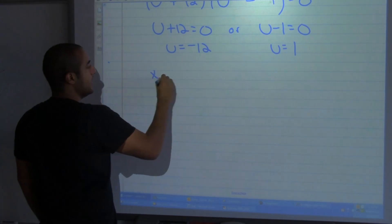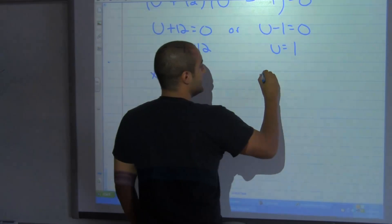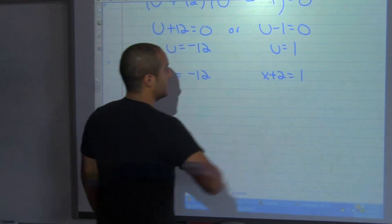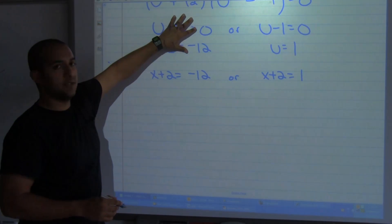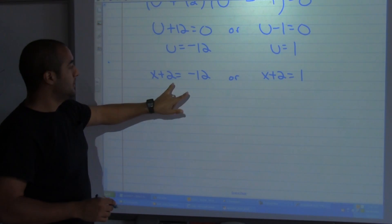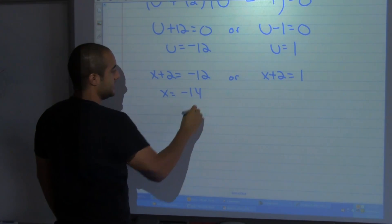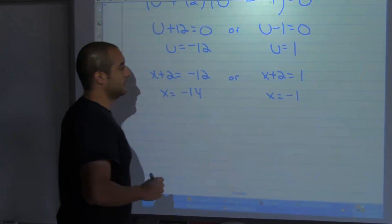So x plus 2 equal to negative 12 and x plus 2 is equal to 1. Okay, so I substitute it and then I put it back. Now I'm going to go ahead and say that x is equal to negative 14 or x is equal to negative 1.